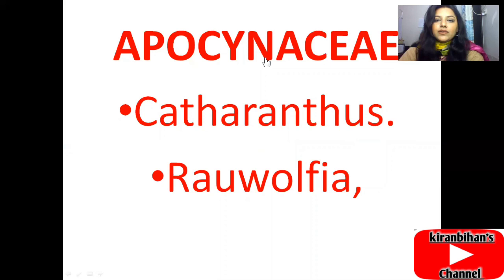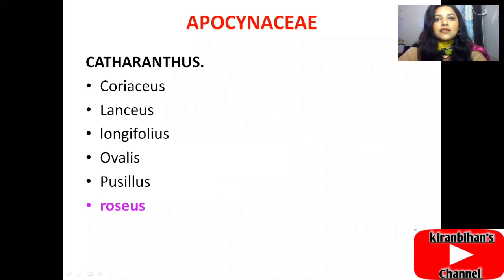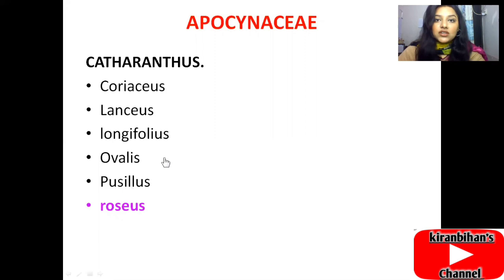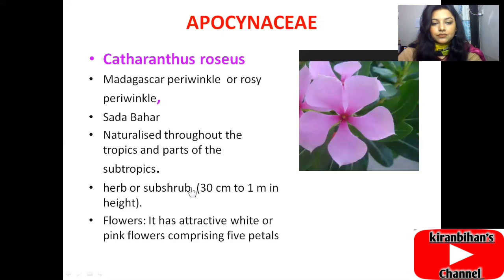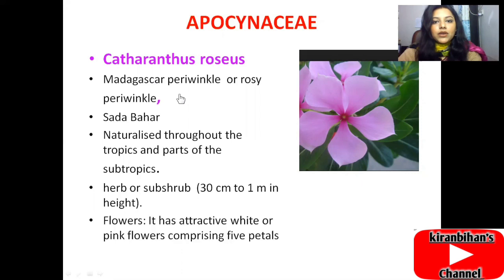In the Apocynaceae family we will discuss Catharanthus and Rauwolfia. Catharanthus is a genus, and its species include Coratius, Lentius, Longifolius, Movelius, Pucilius, and Roseus. We are going to learn about the Roseus species. In Apocynaceae, Catharanthus is the genus and roseus is the species. Other names include Aghaskar, periwinkle, and rosy periwinkle — these are synonyms of Catharanthus roseus.